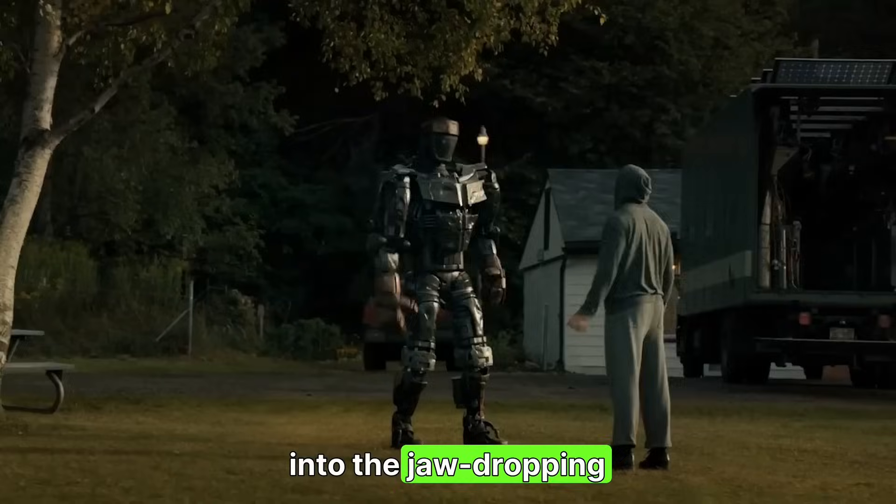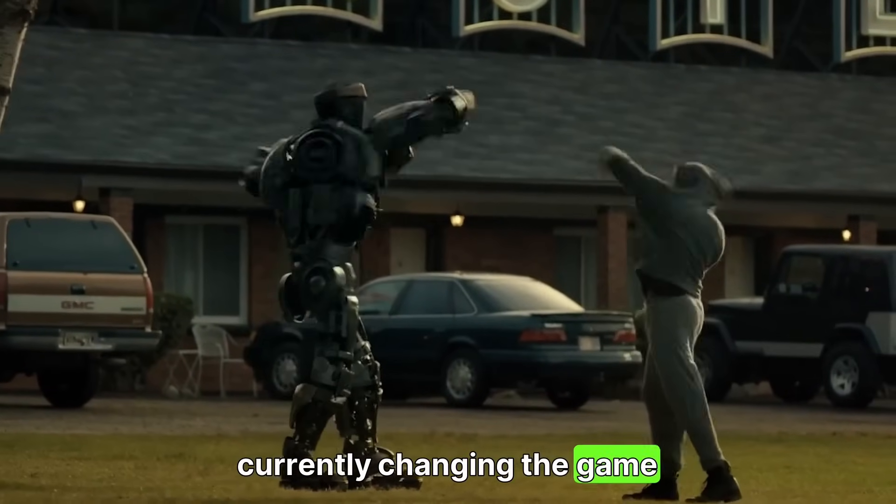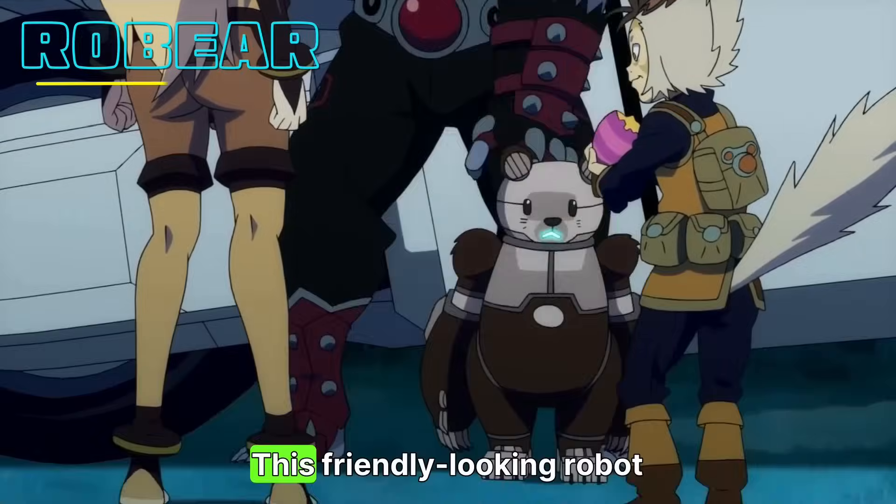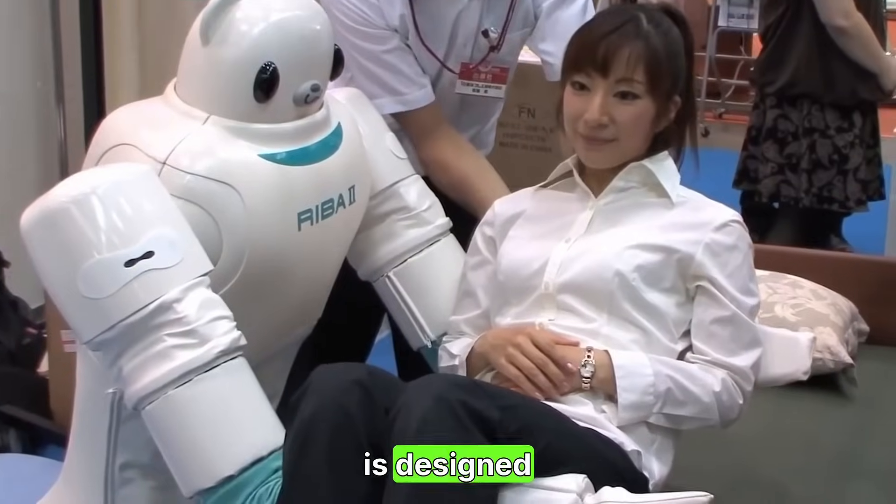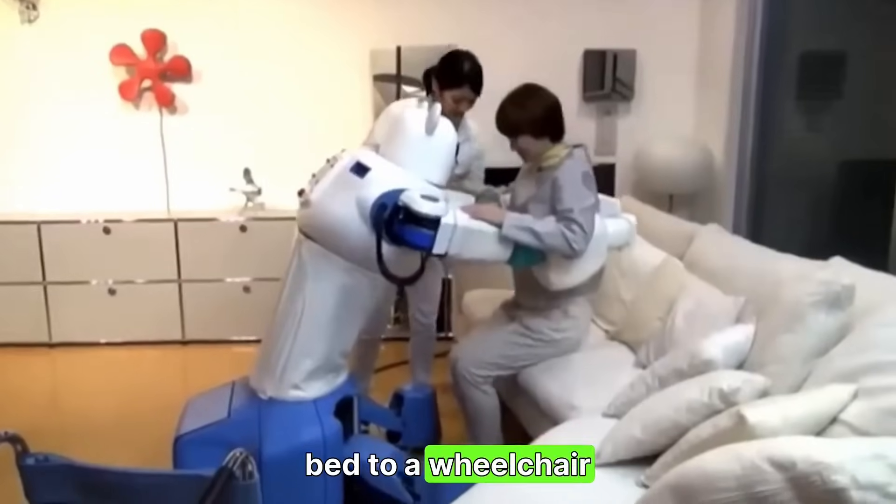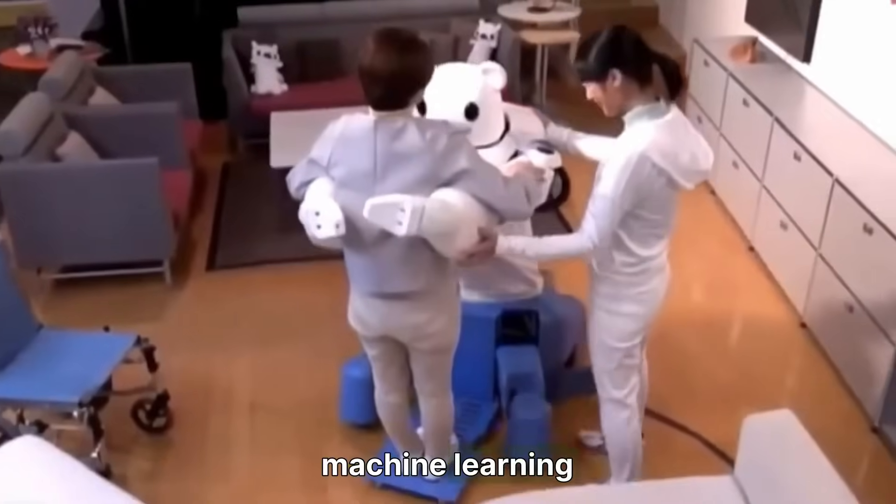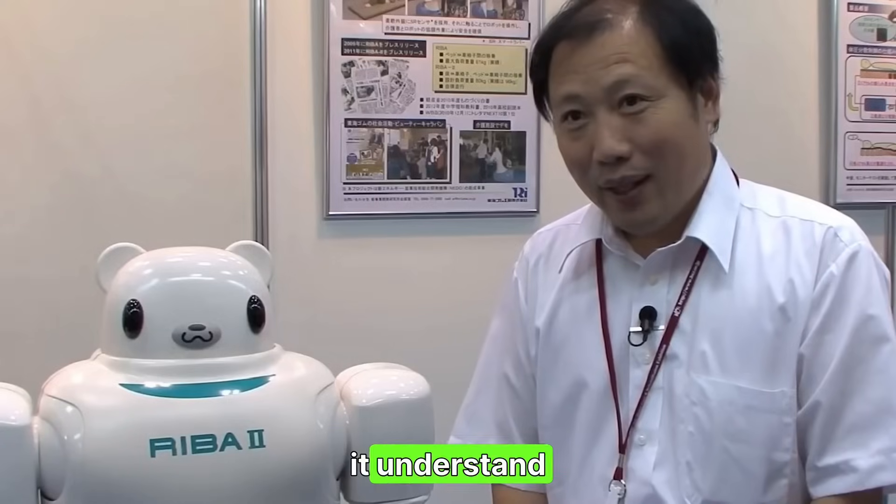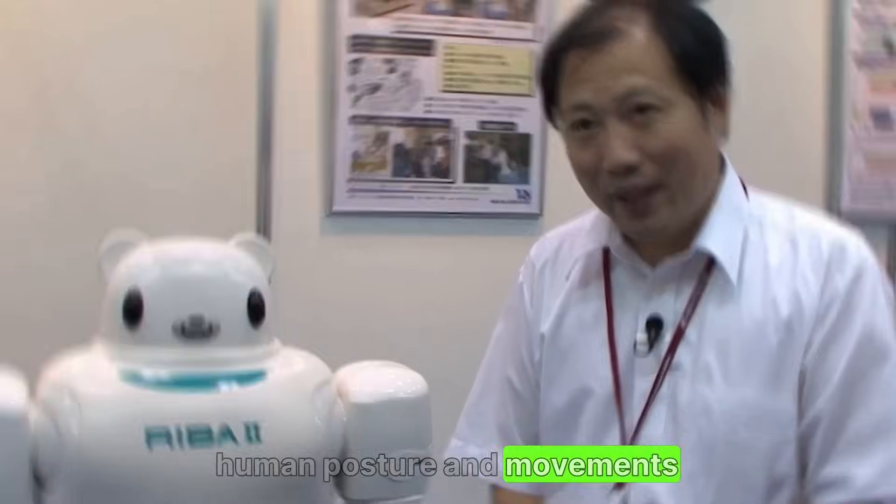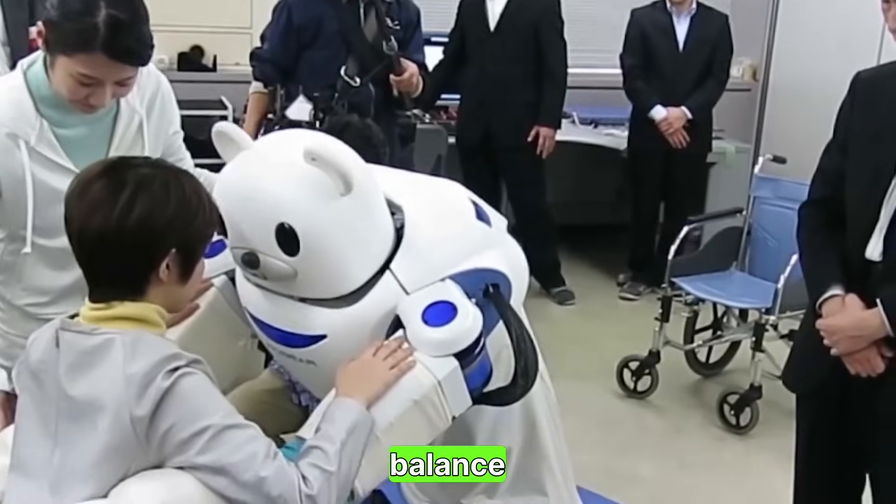Now let's get into the jaw-dropping details of Japan's AI robots currently changing the game. First up, RoBear. This friendly-looking robot is designed to help elderly patients stand up or transfer from a bed to a wheelchair. It's equipped with advanced sensors and powered by machine-learning algorithms that let it understand human posture and movement. RoBear isn't just about strength, it's about care, balance, and empathy.